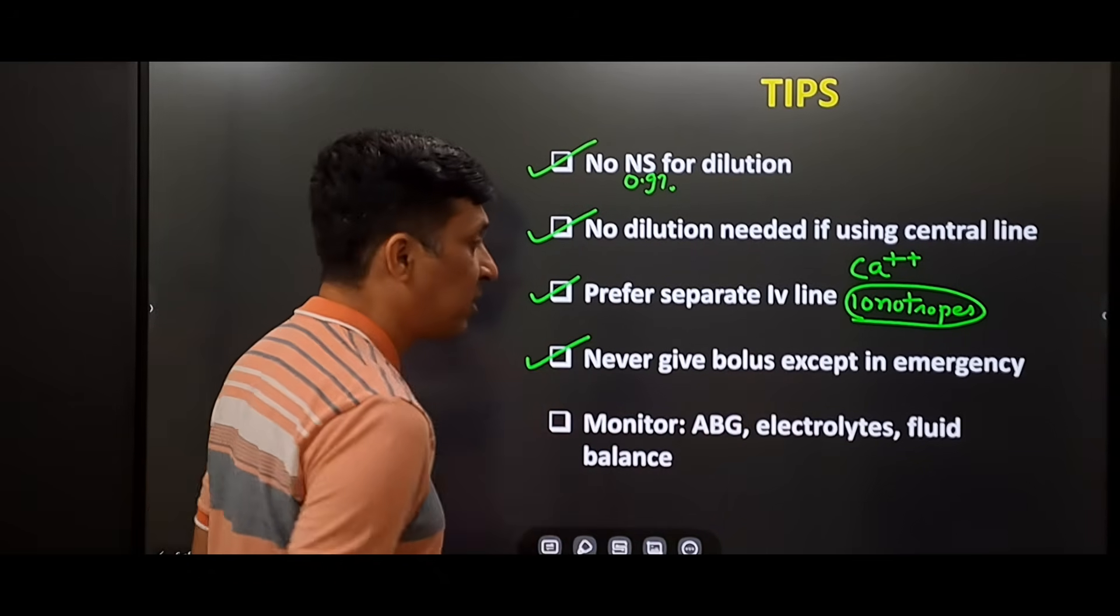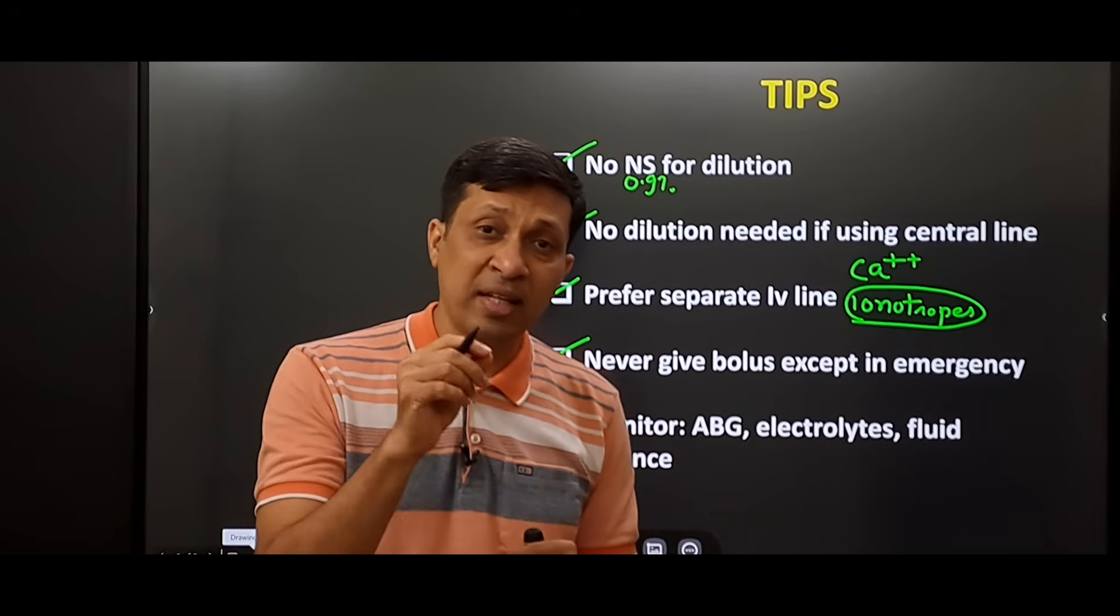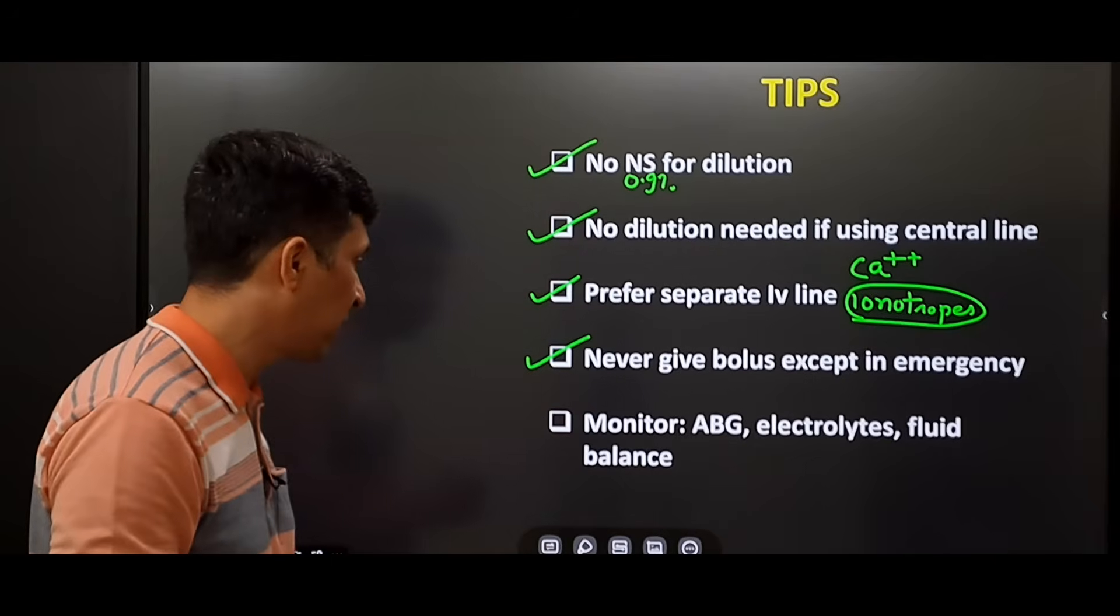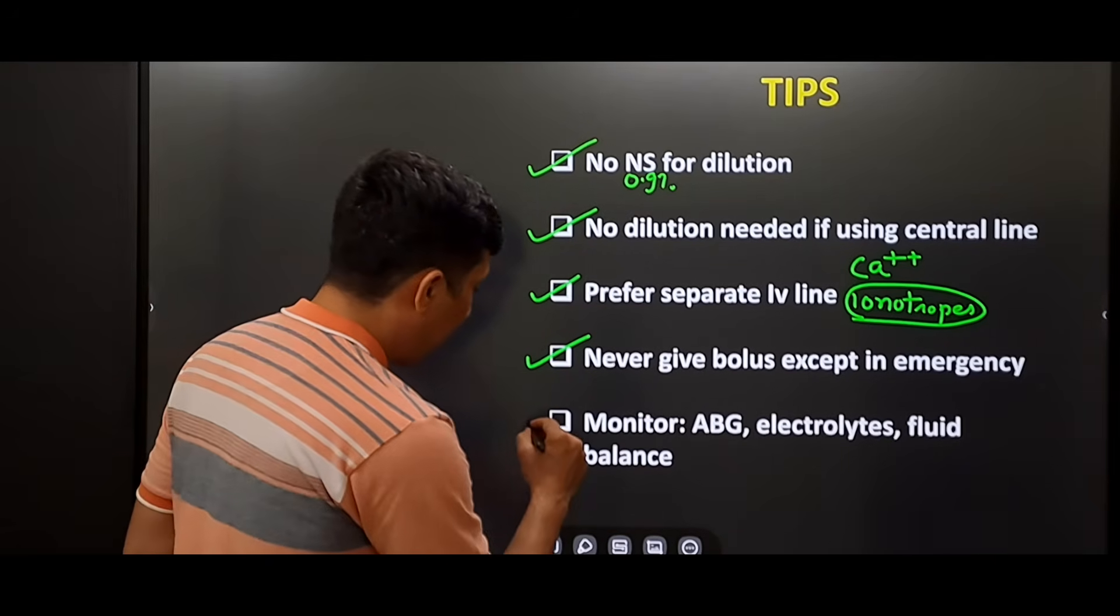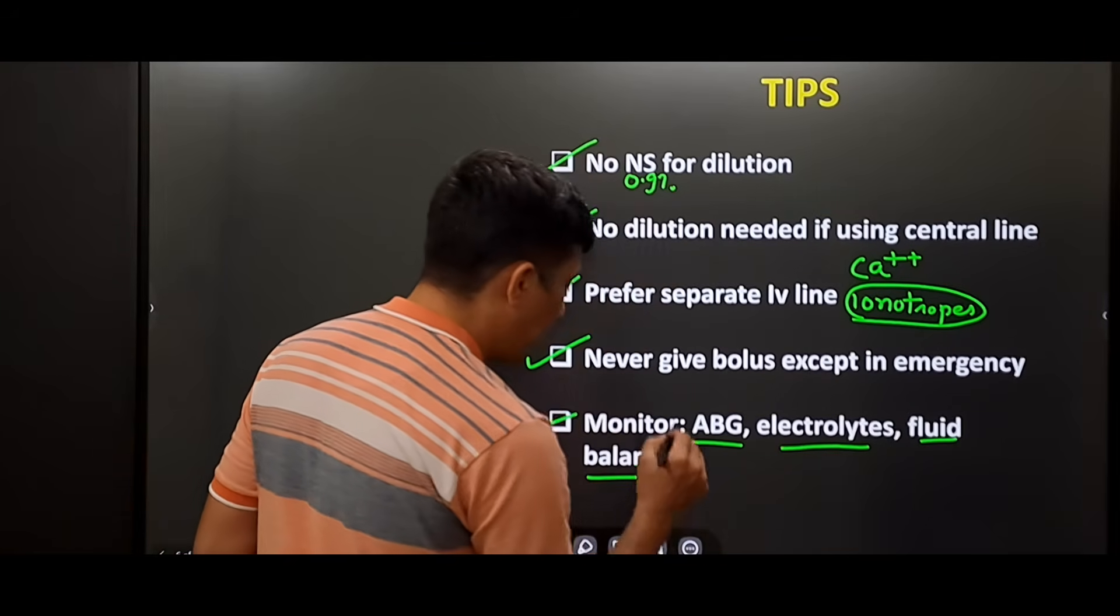Second, never give this drug in bolus except in emergency. In emergencies like shock or during cardiac arrest, only then you should give bolus. Otherwise, you have to give in diluted form. Always monitor ABG, electrolytes, and fluid status of the patient.